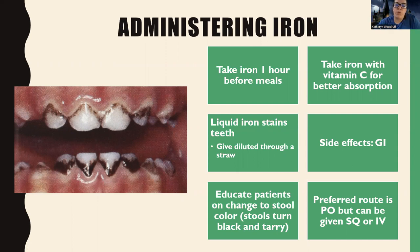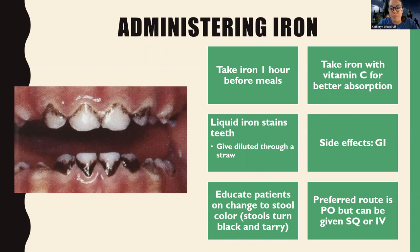Iron is best absorbed on an empty stomach — no food — so it's best to take it one hour before meals. Here's the thing though: it causes a lot of GI side effects and many people don't tolerate it, so sometimes people do have to take it with food. But in nursing school world we want the perfect picture, so we prefer them to take it on an empty stomach. Also, iron is absorbed better when taken with vitamin C — if they take a glass of orange juice with it, not food but vitamin C liquid, it can help them better absorb the iron. It's overall preferred to take it on an empty stomach with some sort of vitamin C liquid for best absorption.